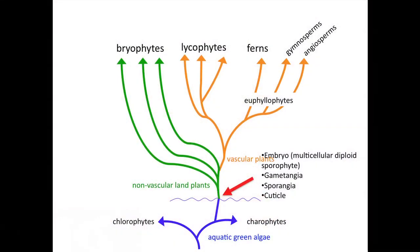Plants evolved gametangia — sterile cells that surround the gametes, the egg and the sperm. The other major innovation was sporangia, another sterile jacket of cells surrounding the developing spores. With all of these things, plants were able to survive and thrive on land. It's thought that the bryophytes, the ancestors of the bryophytes, are the most closely related to the very earliest land plants.